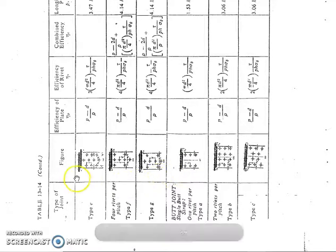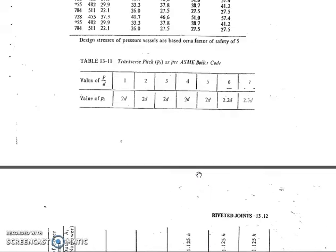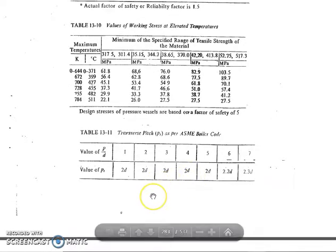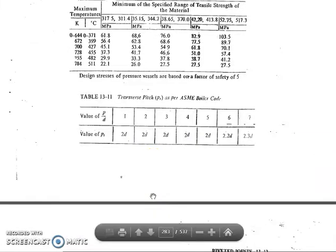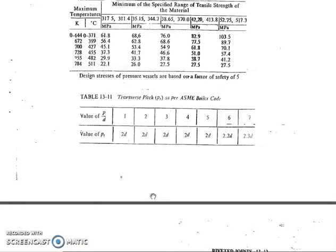We can also use Table 13.11 to find the pitch based on the p/d ratio (pitch to diameter ratio). The permissible pitch is the minimum of the two values obtained: one from the pitch equation with factor 1.875, and the other from Table 13.14. The minimum value is used for further design of the longitudinal joint.